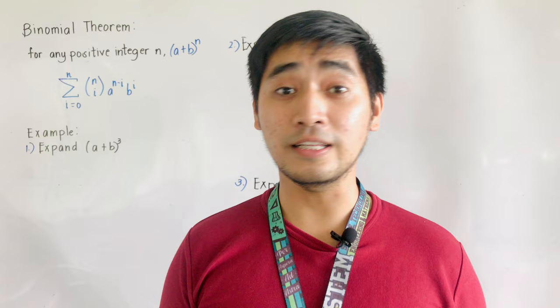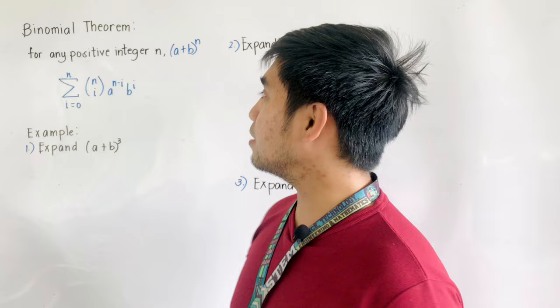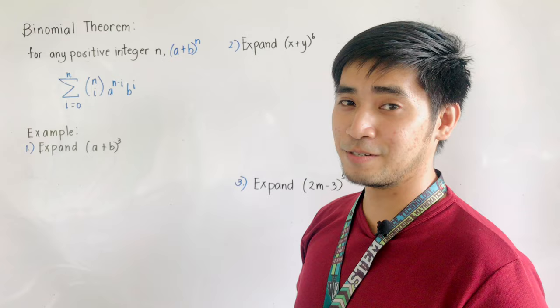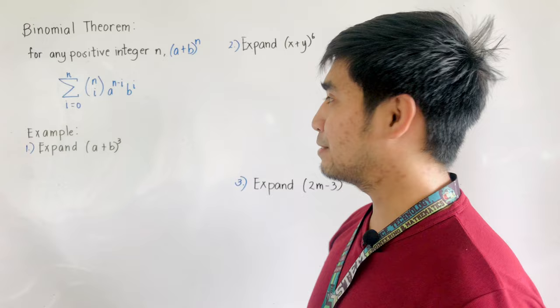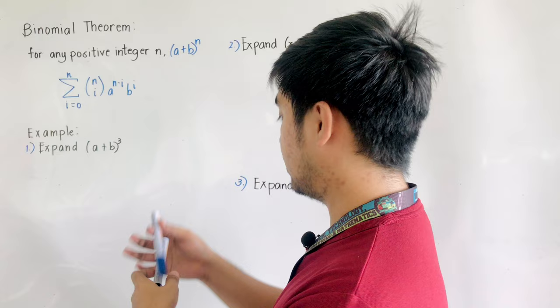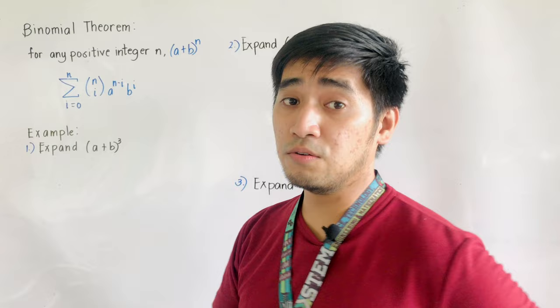So what is the Binomial Theorem, or what is the formula? For any positive integer n, the expansion of (a + b) raised to n is the summation of the combination C(n, i) times a raised to (n minus i) times b raised to i, from i equals zero up to n. Always remember that n is the exponent of the binomial and is the upper limit, and i is the starting point, always equal to zero.